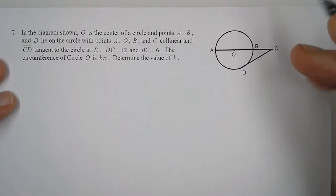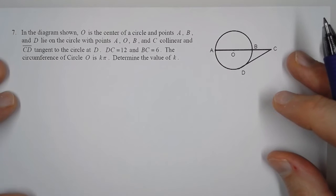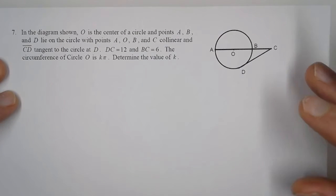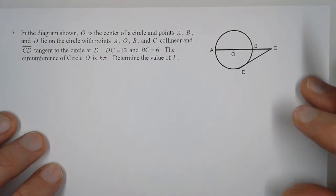They tell us that DC is 12 and BC is 6. The circumference of the circle is K pi, and we want to determine the value of K.